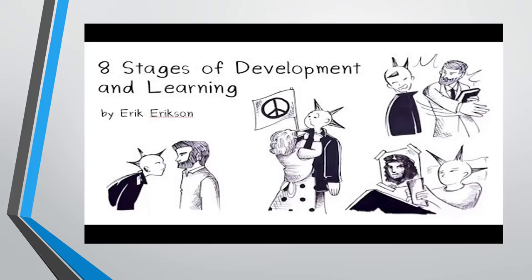Stage 2 — Autonomy vs. Shame and Doubt: In early childhood we experience ourselves and discover our body. We ask, 'Is it okay to be me?' If we are allowed to discover ourselves, we develop self-confidence. If we are not, we can develop shame and self-doubt. Both parents now play a major role.